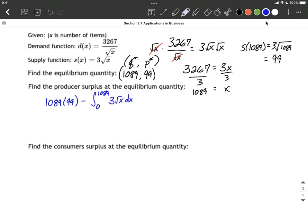Alright, from here, let's go ahead and multiply together 1089 multiplied by 99, gives us 107,811. Minus, I'm going to bring that 3 out in front, we still have the integral from 0 to 1089.